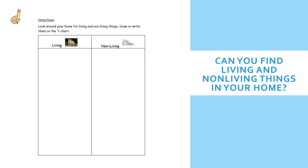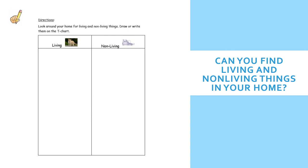Let's take a look at this paper — you can make this one yourself. You need two columns: one says living and the other one says non-living. Look around your home for living and non-living things, then you can draw a picture or write the word on the T-chart. For example, my son has a cat, so I can draw a picture of a cat or write the word 'cat' in the box where it says living. I also have shoes in my home, so I can draw a picture of a shoe or write the word 'shoe' in the column where it says non-living things. See how many you can find.